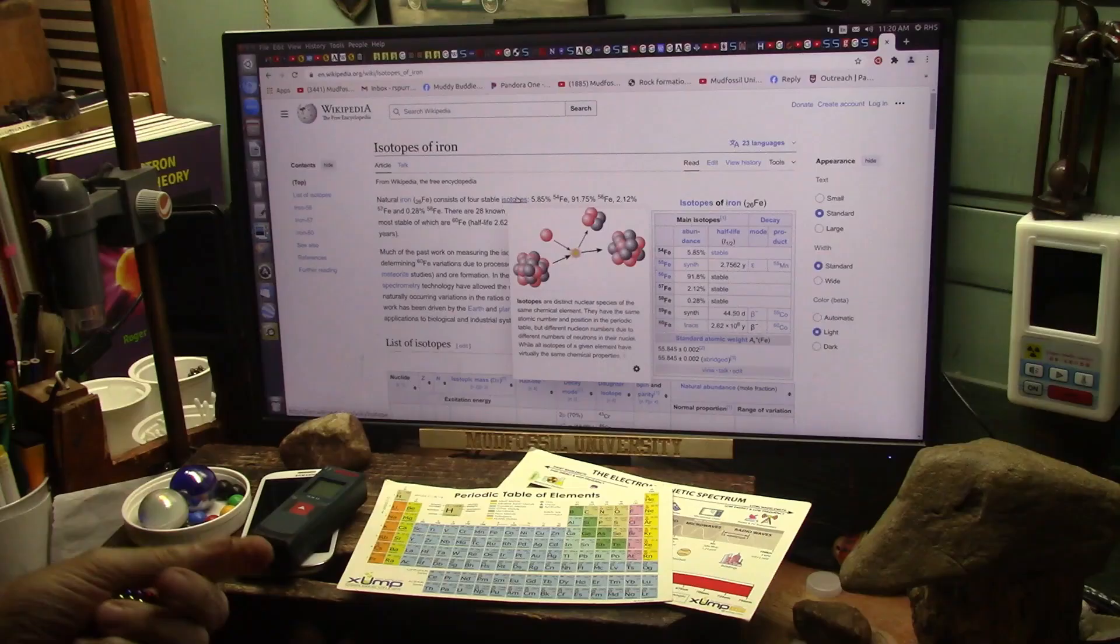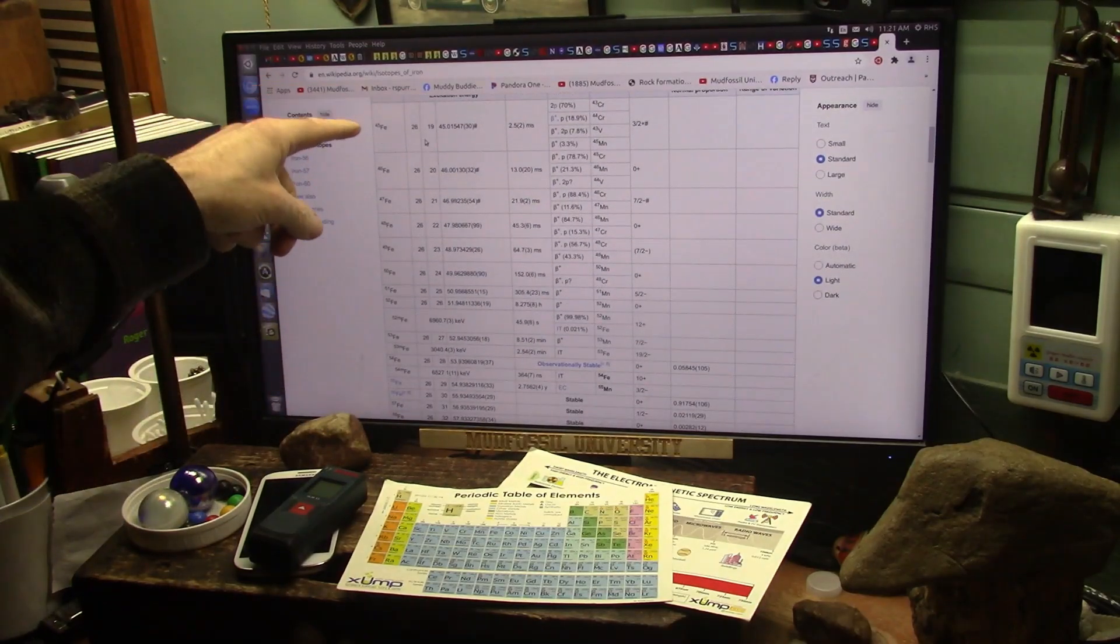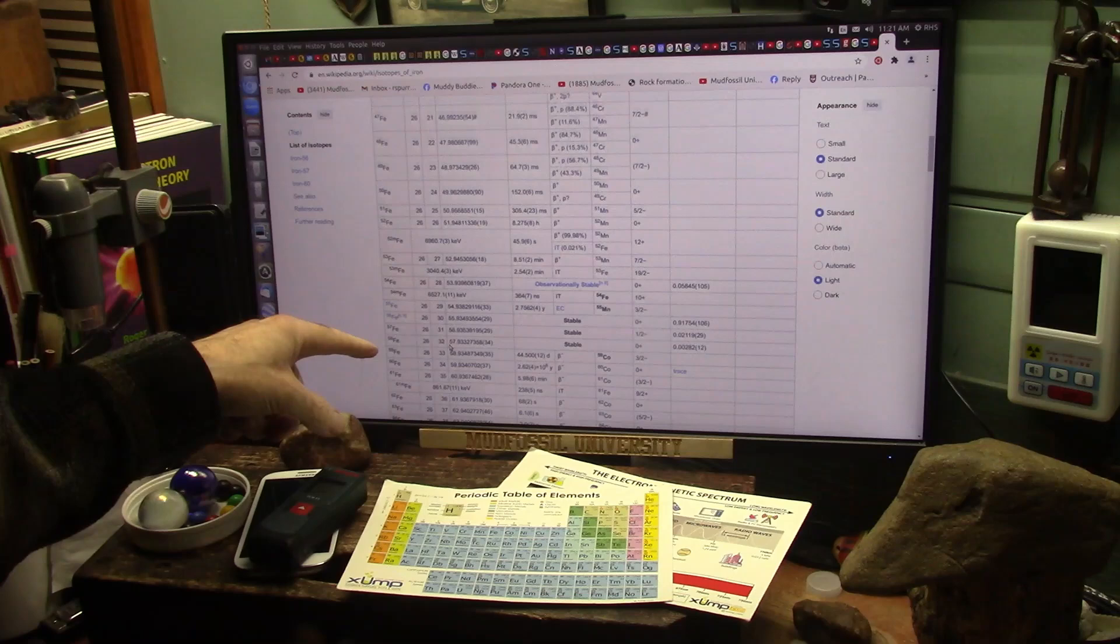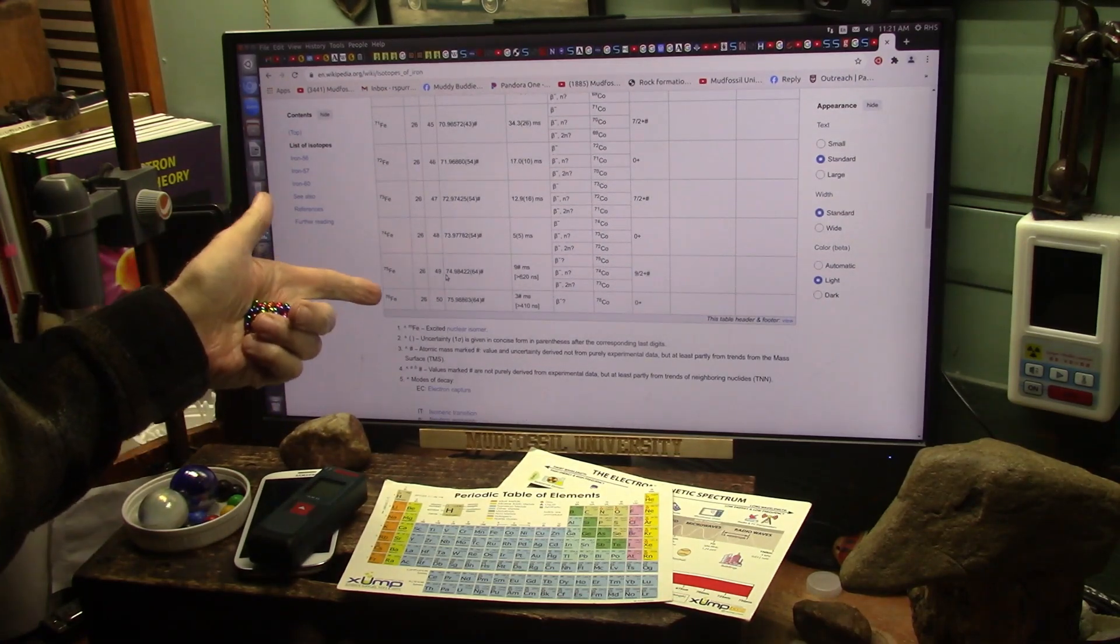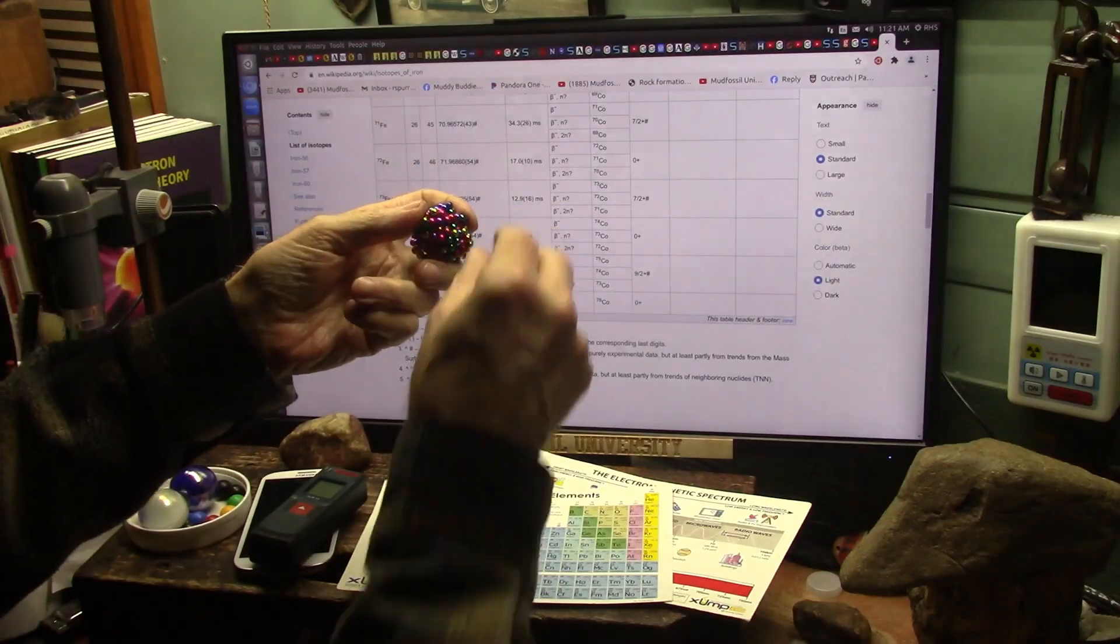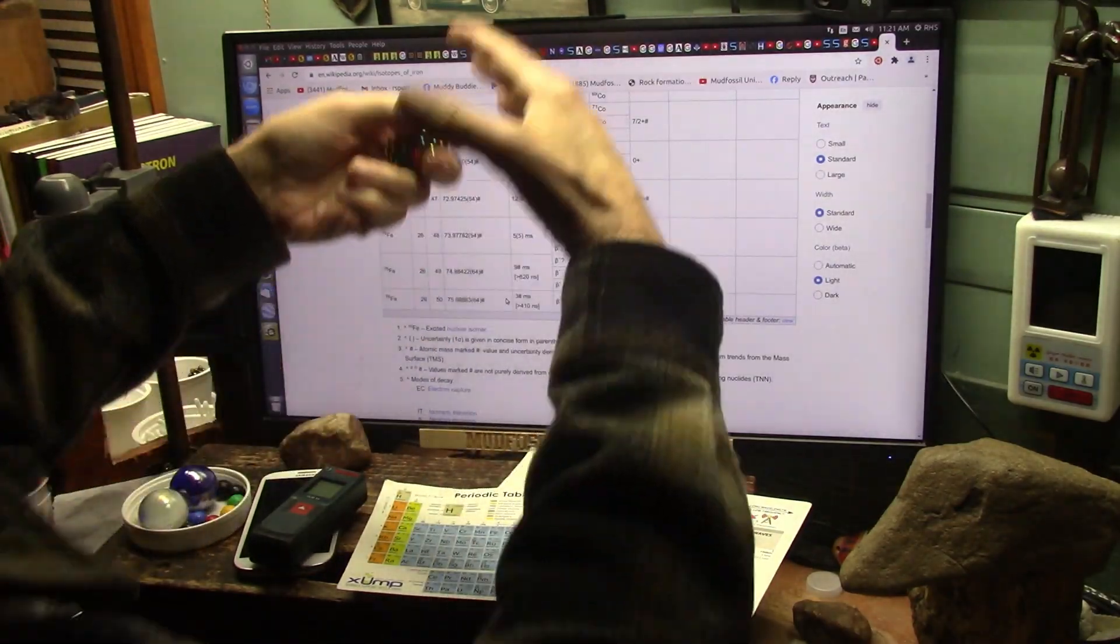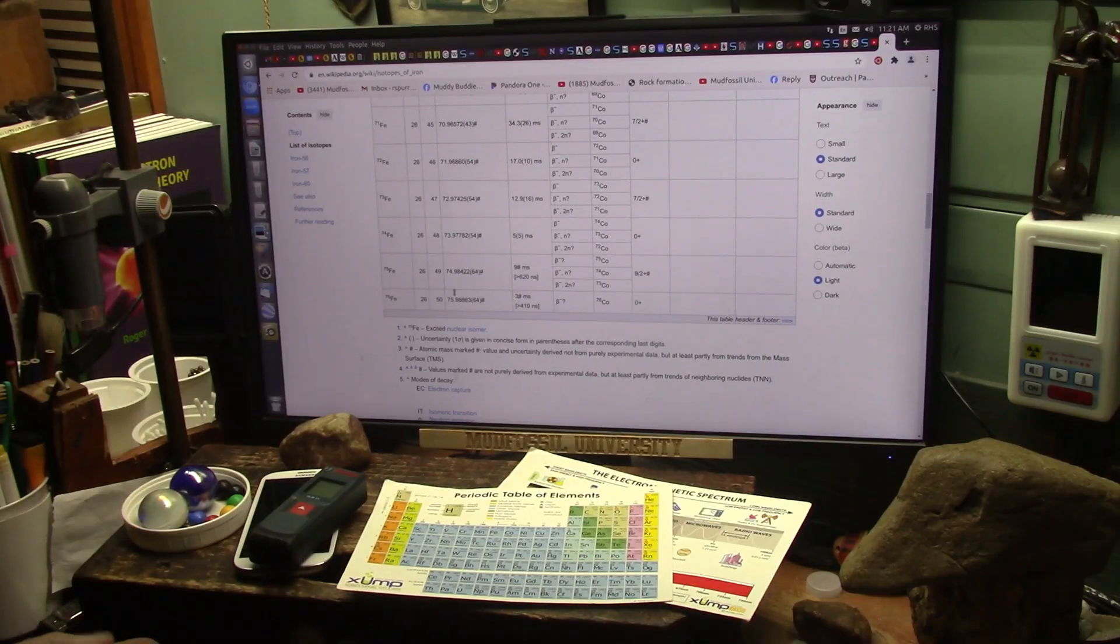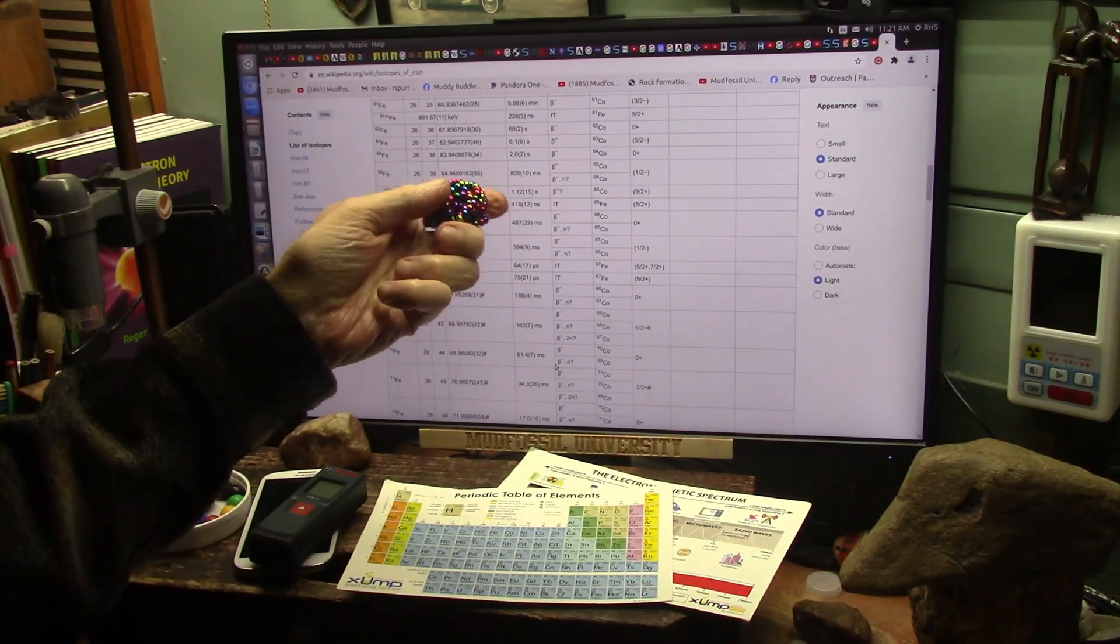And how many is there? Well they've defined 28 different states of iron. All of these, look at this, all those are different irons. And all they are is one or two of these particles missing, or five or ten or twenty, or too many, having too many or not enough.